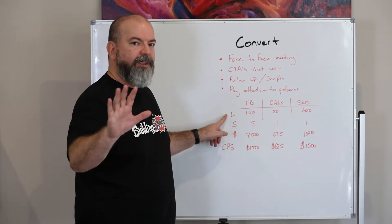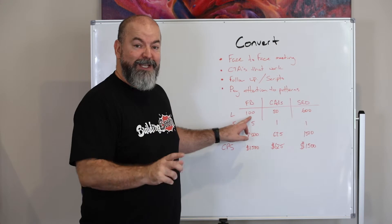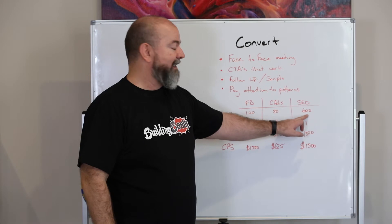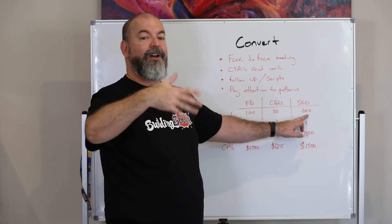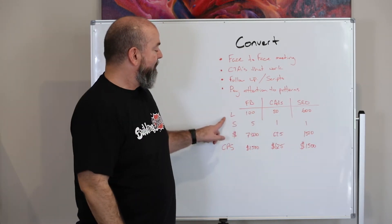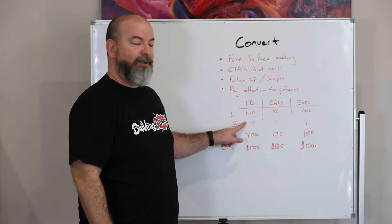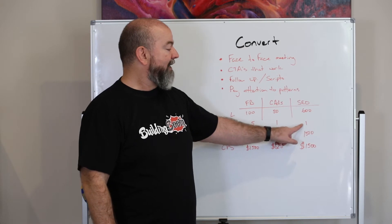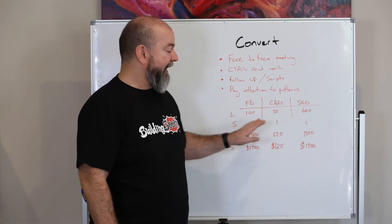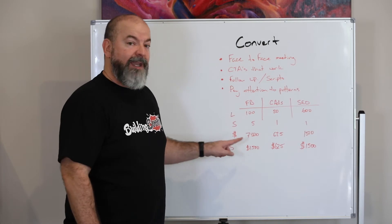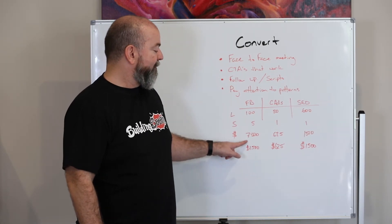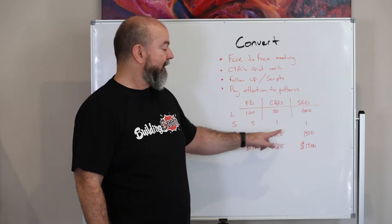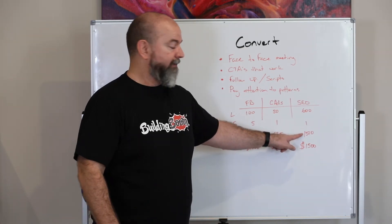So let's look at this. Let's say just for a hypothetical example, you get 100 leads from Facebook in the first month, you get 50 leads from Google ads, and you get 600 people visiting the website with SEO. Out of those, you get five sales from the Facebook ads, you get one sale from the Google ads, and one sale comes from your SEO traffic that hasn't clicked on any paid ads. You're spending $7,500 on Facebook ads per month, $625 on Google ads per month, $1,500 on SEO per month.